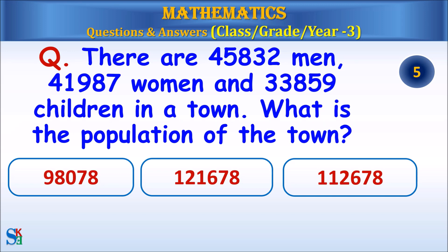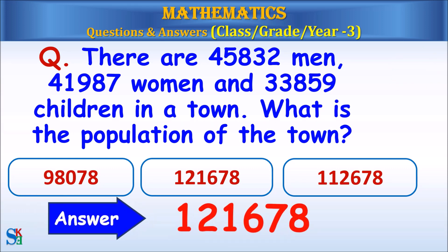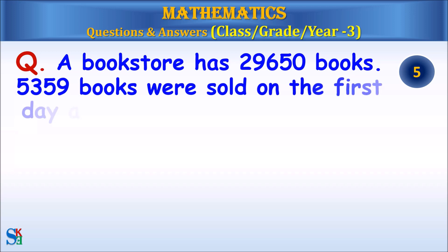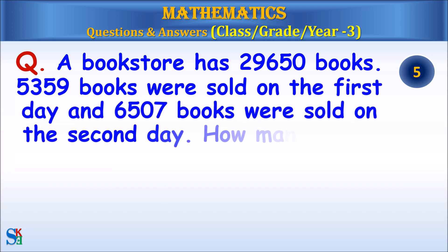There are 87,819 adults and 33,859 children in a town. What is the population of the town? Answer: 121,678.